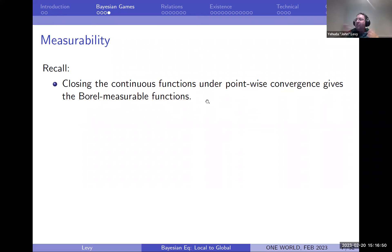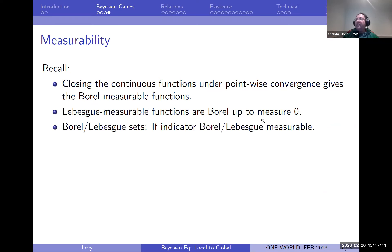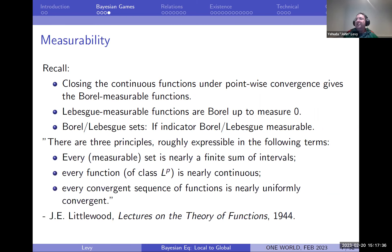Make sure that family is closed under pointwise convergence with some induction argument, and you get all Borel measurable functions. You can extend that to Lebesgue measurable functions, which are Borel up to measure zero. You get Borel sets by taking indicator functions of sets. When you start playing around with it you see that's a very far-reaching generalization — but Borel functions, up to measure zero, actually behave a lot like continuous functions.